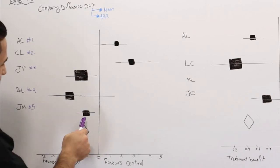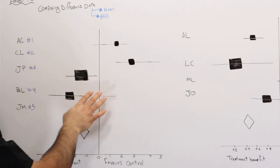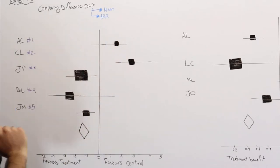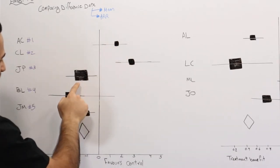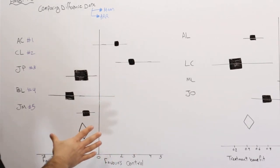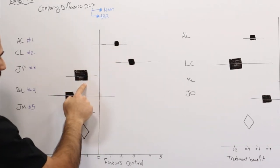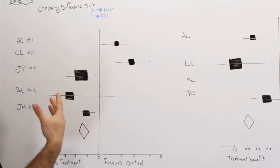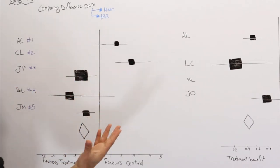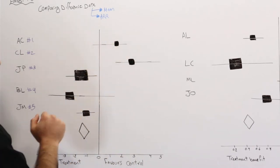Each square represents the point estimate of the result of a study. The size of the square indicates sample size — a smaller square means a smaller sample size, and a larger square means a larger sample size. So the largest square in this example had the most participants compared to the other four studies.